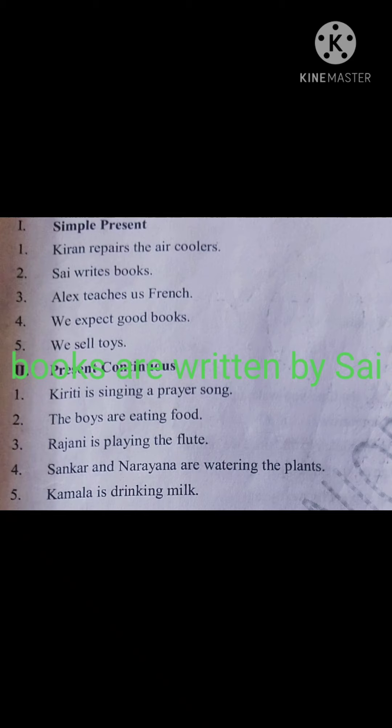'Saai writes books' becomes 'Books are written by Saai.' Apply our rules: identify the verb, identify the subject, identify the object, identify the tense. Then place the object in the subject position, take the suitable helping verb, use the V3 form of the verb, add the preposition, and place the subject in the object position. So: 'Books are written by Saai.'